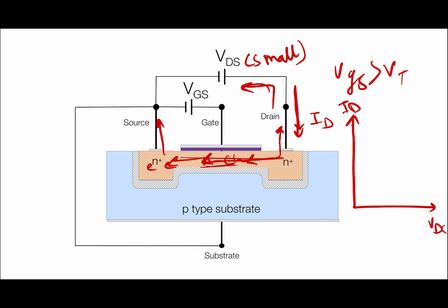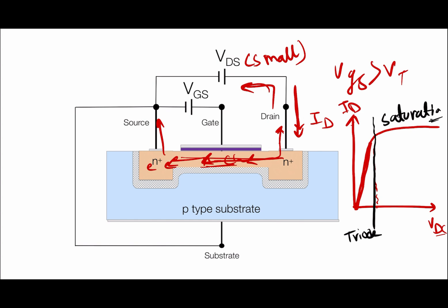If we draw the ID versus VDS curve, with ID on one axis and VDS on the other: if we increase VDS by a small amount, ID will increase. However, as we increase VDS further beyond a certain point, the current saturates. The first region is called the triode region, and the second region is called the saturation region. I will explain in the next video why it is called the triode region, why the saturation region has constant current, and I will also derive the current equation of the MOSFET using the pinch-off concept.